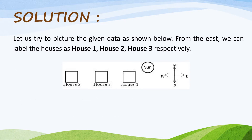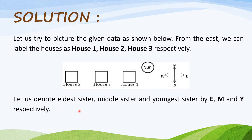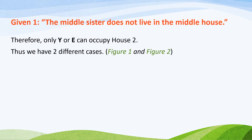Solution. Let us try to picture the given data as shown below. From the east, we can label the houses as house 1, house 2, and house 3 respectively. Let us denote the eldest sister, middle sister, and youngest sister by E, M, and Y respectively. It is given that the middle sister does not live in the middle house. Therefore, only Y or E can occupy house 2. Thus, we have two different cases.